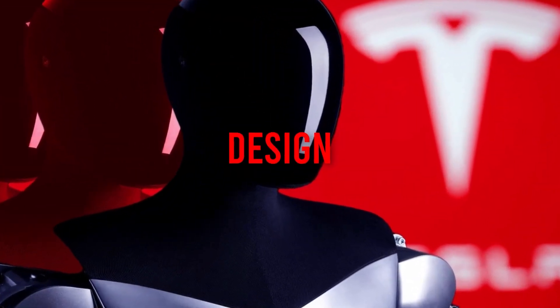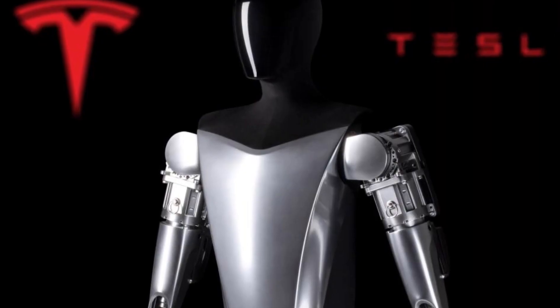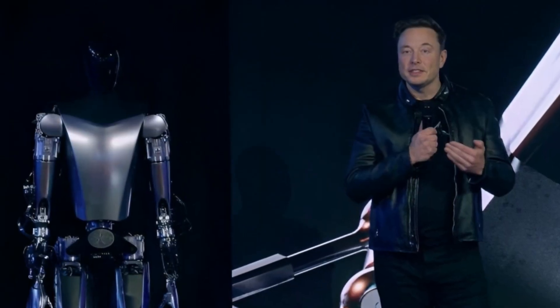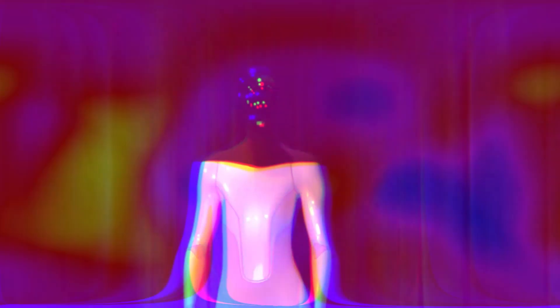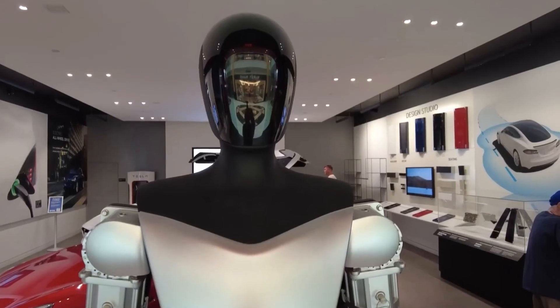Design: Optimus is designed to look like a human, but not too human-like to avoid the uncanny valley effect. It measures 5 feet 8 inches tall, which is slightly shorter than the average human height. It has a sleek and futuristic appearance with black and white colors and Tesla logos on its chest and back.